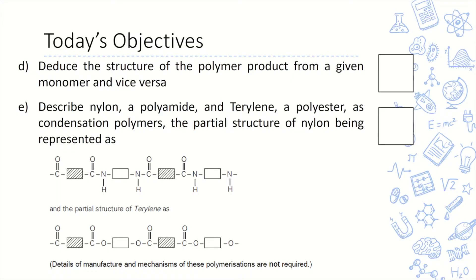We also look at how to deduce the structure of a polymer from a given monomer, and vice versa — working backwards. Today the most important part is learning new types of polymers. Other than polyethene, which is made from alkene, we look at two new polymers with different functional groups: polyester and polyamide.